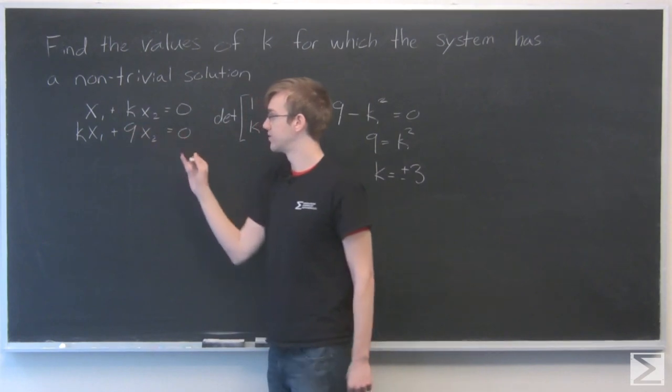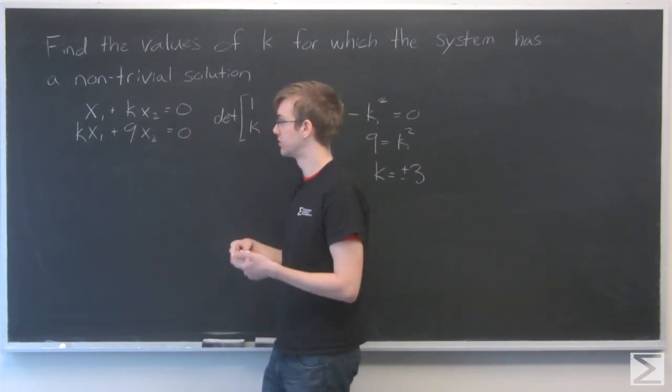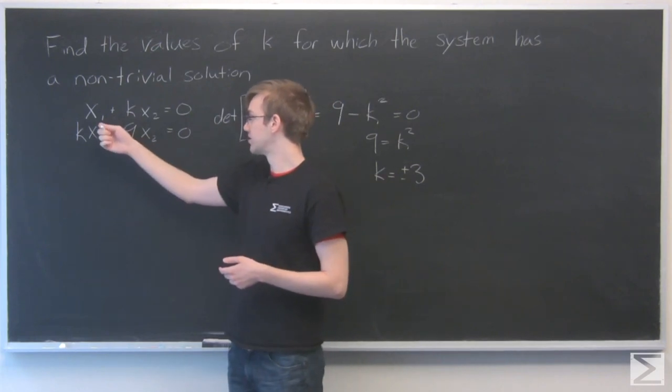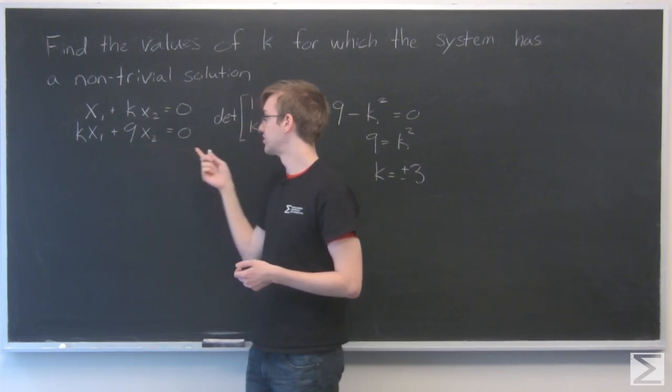So we can see that when k is plus or minus 3, these two equations just become a multiple of each other. For example, x1 plus 3x2 equals 0, and 3x1 plus 9x2 equals 0.